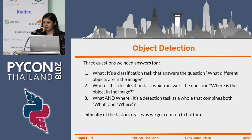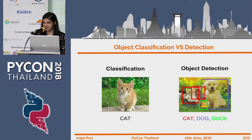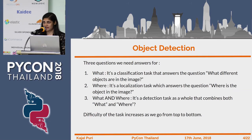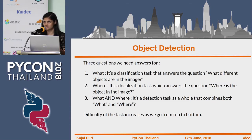In object detection we generally answer three questions. The first question is 'what' — a classification task: what different objects are in the image? The second question is localization: where is the object in the image? In object detection we combine the 'what' and 'where' and answer this question. The difficulty increases as we go from top to bottom. Localization has not become trivial; it becomes more difficult as we have more objects in an image.